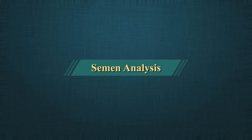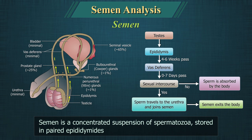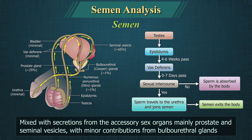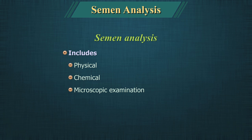Semen Analysis. Semen is a concentrated suspension of spermatozoa produced in the testes, stored in the paired epididymis, mixed with secretions from the accessory sex organs — mainly the prostate and seminal vesicles — with minor contribution from the bulbourethral glands. Semen analysis is the physical, chemical and microscopic examination of semen.